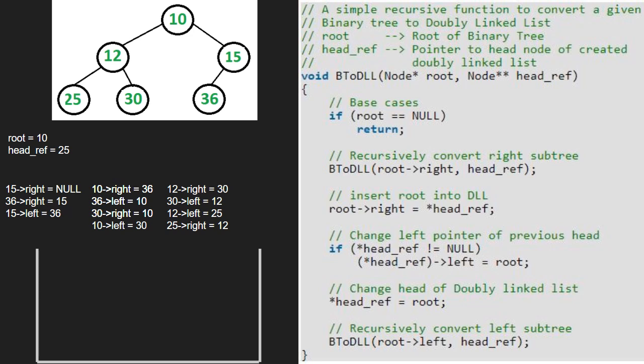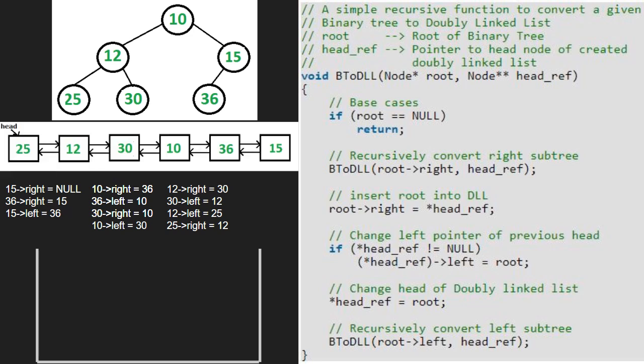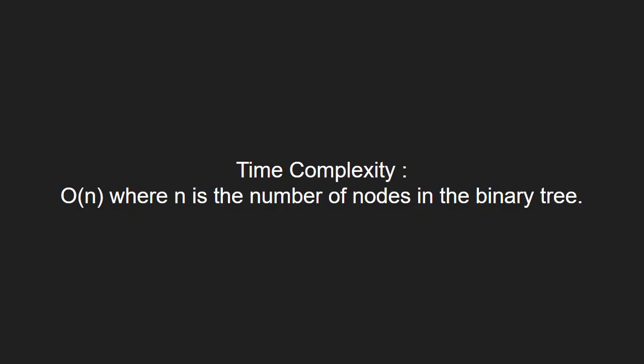Also, we have finished execution for node 10 and we have the final doubly linked list. Now let us have a look at the time complexity of the program. This code will run in O(n) complexity, where n is the number of nodes in the binary tree. With this, we come to an end of this tutorial. For any doubts or suggestions, please leave them in the comment section below. Thank you for watching.